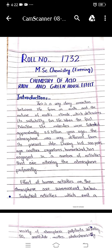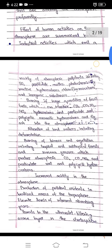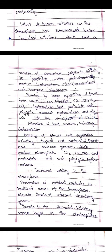Industrial activities emit a variety of atmospheric pollutants including sulfur dioxide, particulate matter, photochemically reactive hydrocarbons, chlorofluorocarbons, and inorganic substances. Due to industrial activities, the burning of large quantities of fossil fuels introduces carbon dioxide, carbon monoxide, sulfur dioxide, nitrogen oxides, hydrocarbons, and particulate soot into the atmosphere. Soot can be in solid, gaseous, or liquid state, including polycyclic aromatic hydrocarbons and fly ash.